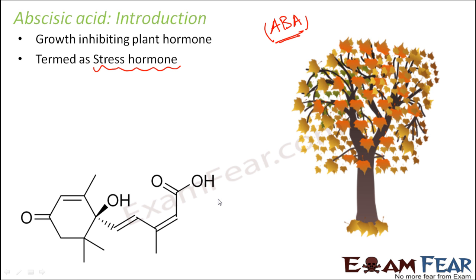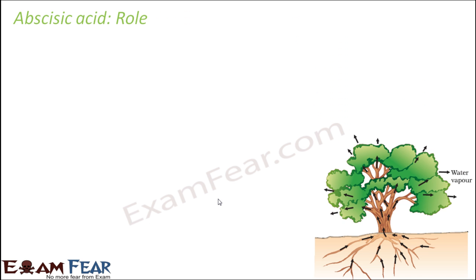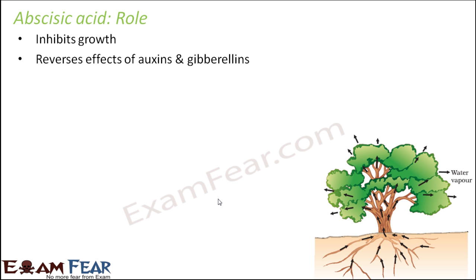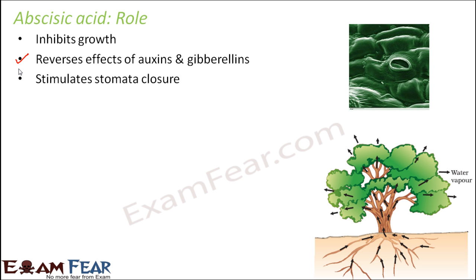Here you can see how the structure of abscisic acid looks like. Let us talk about the roles of abscisic acid. It inhibits growth, as mentioned. It reverses the effects of auxins and gibberellins — it is exactly the opposite of them because they promote growth, helping in stem elongation, while ABA stops growth. It also stimulates stomata closure, which is one of the activities that stops growth in plants.